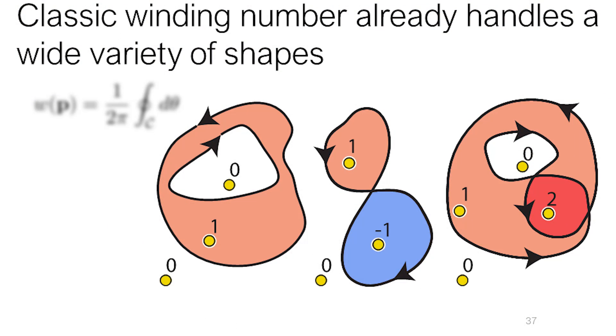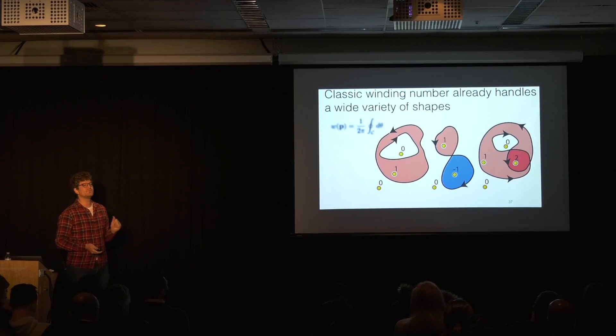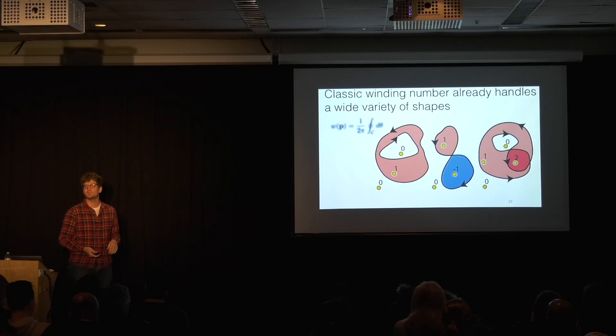This already, even for clean geometry, encompasses a lot of interesting things. So we can have nesting, we can have things that are flipped inside out. We'll get a negative value. That's useful. It'll tell us whether we're in a flipped inside out part of the shape or some self-intersecting part of the shape. In fact, this entire slide, if we treat this as a multi-component curve, still makes sense in terms of this winding number value.